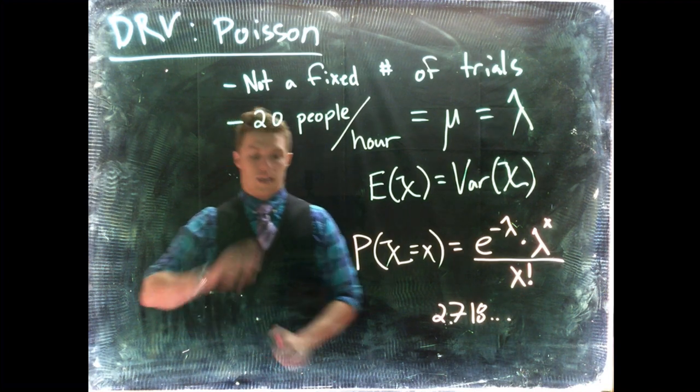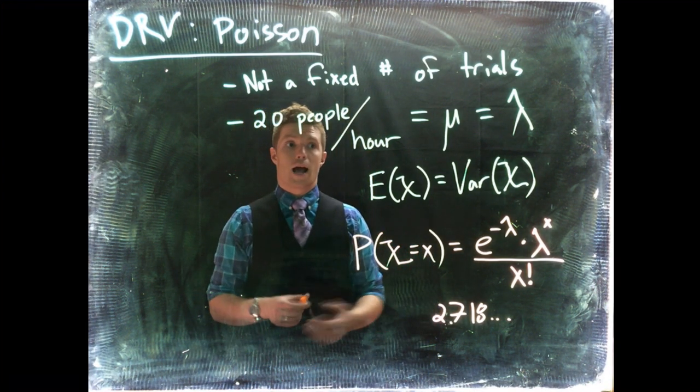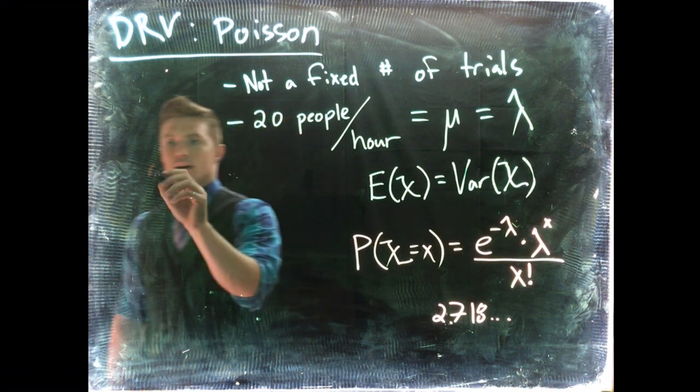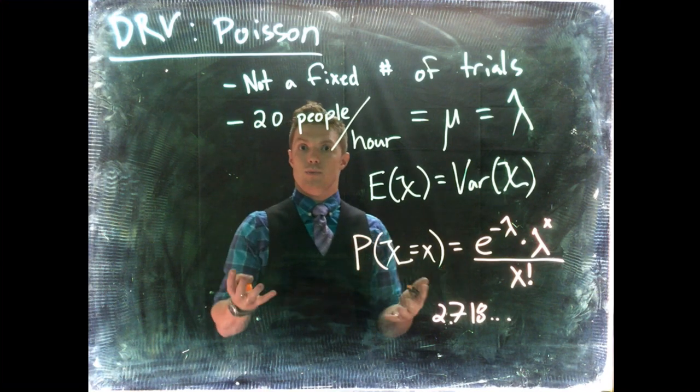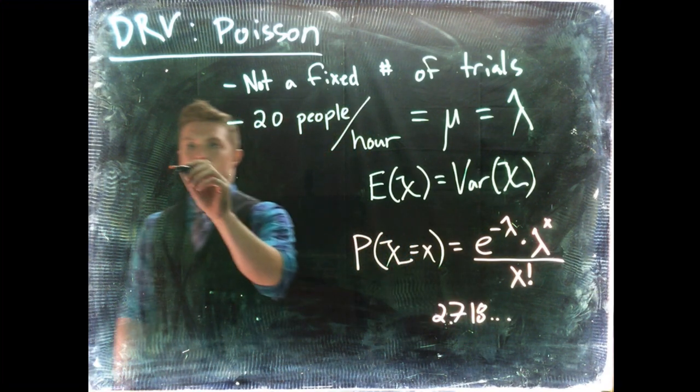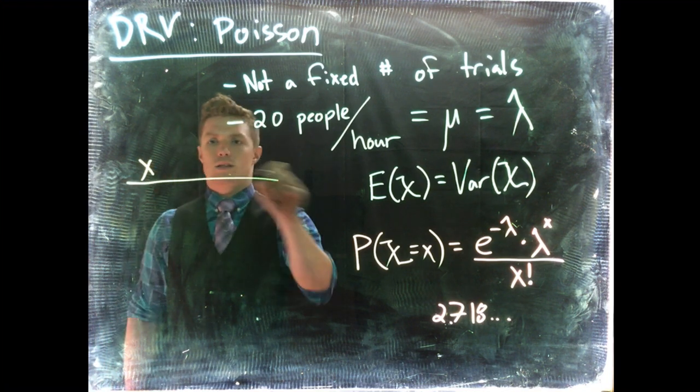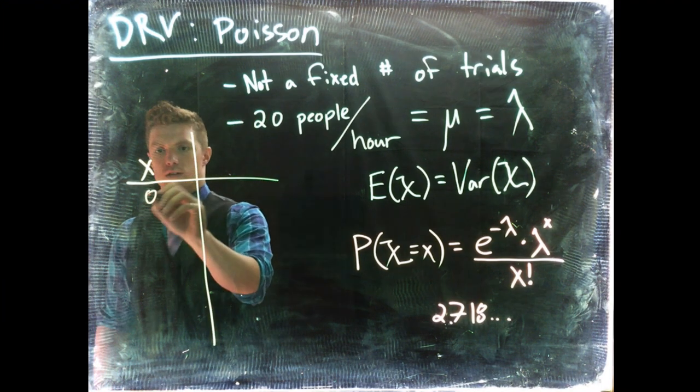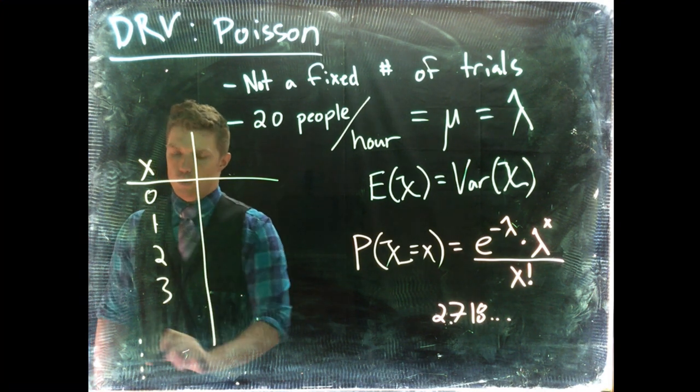What this allows us to do is, okay let's say on average 20 people per hour show up to our coffee shop, so we can now set up, I want to know what's the probability that we have at least 20 people or 20 or more people. What we can do per hour, we can say, our member of our support we can go 0, 1, 2, 3, and we can continue on and on.